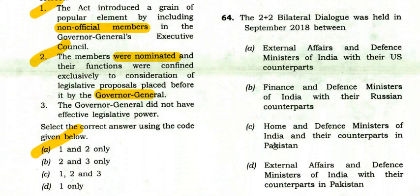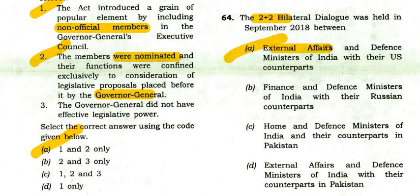The 2+2 bilateral dialogue was held in September 2018 between India and the USA. Option A is correct — it was between the External Affairs Ministry and the Defense Ministry of India with their US counterparts.